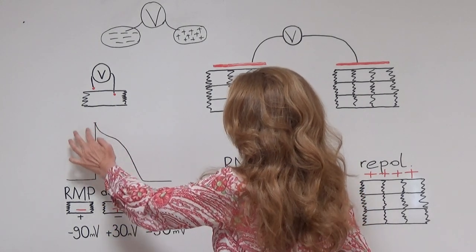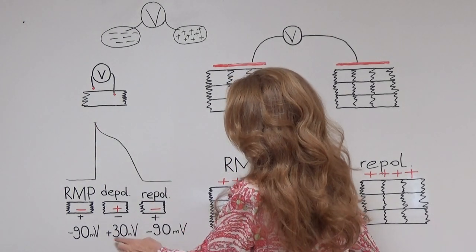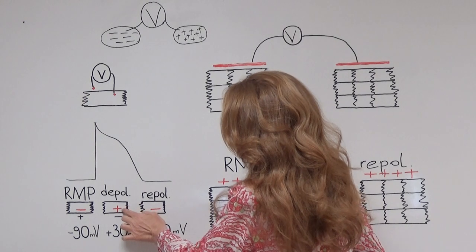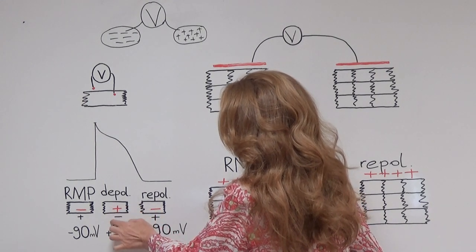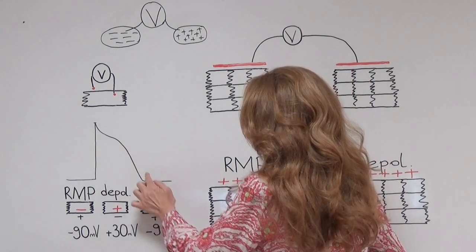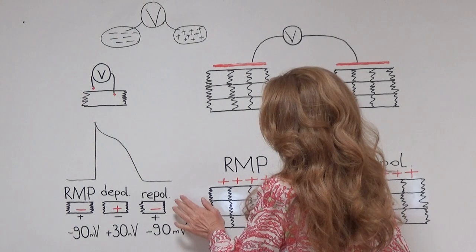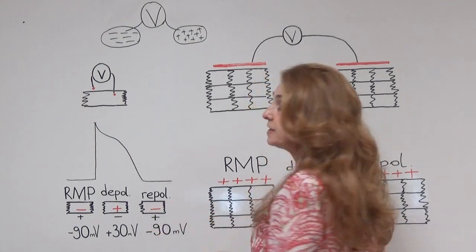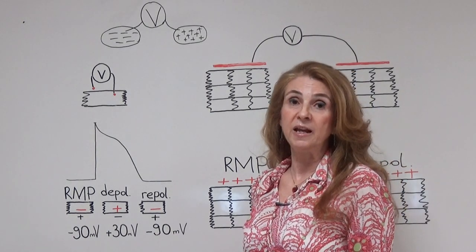During depolarization, the action potential reaches a peak of about plus 30 or plus 40 millivolt. Plus 30 means that the inside of the cell becomes 30 millivolt more positive compared to the outside. After repolarization, the cells reach their resting membrane potential once again and the inner side of the membrane is negative again.